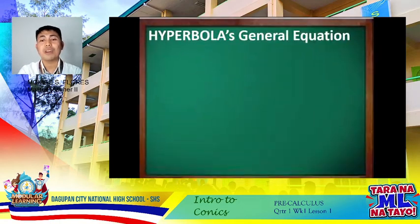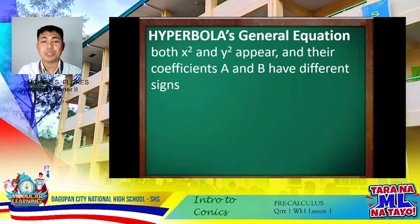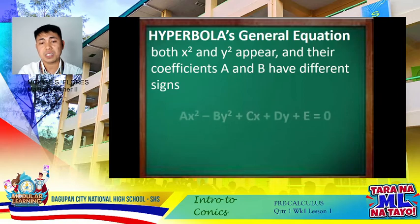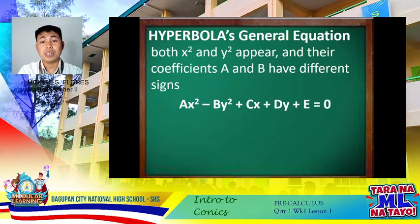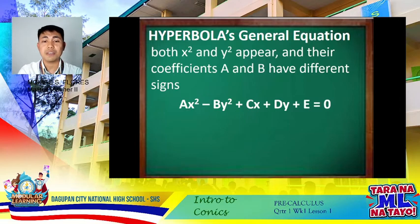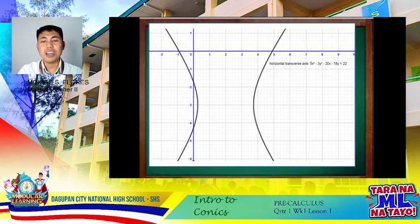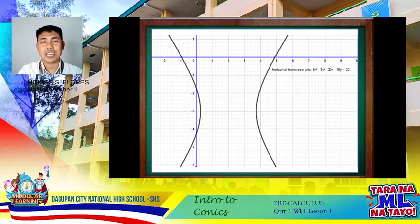For the general equation of a hyperbola, just like circle and ellipse, both x and y appear on the second degree with different numerical coefficients. But for a hyperbola, they have different signs. The formula is: ax² − by² + cx + dy + e = 0. Example: 5x² − 3y² − 20x − 18y − 22 = 0. The graph shows a horizontal transverse axis. The steps for graphing a hyperbola will be further discussed in our succeeding lessons.